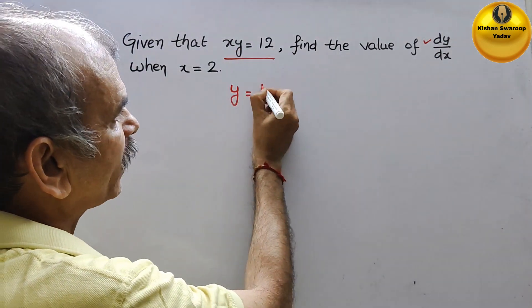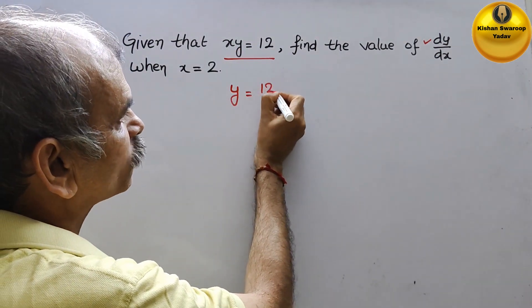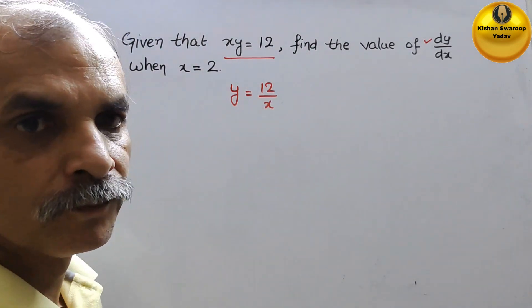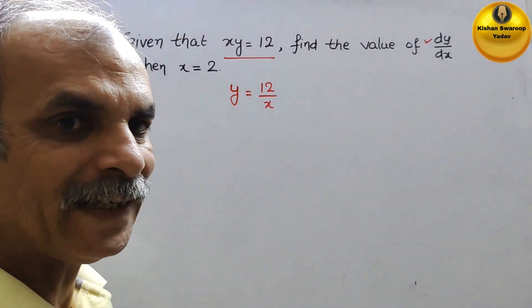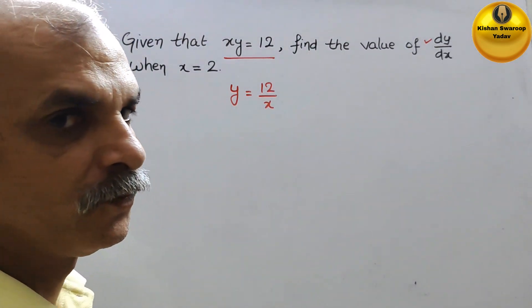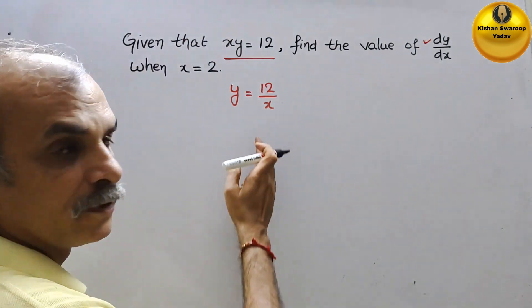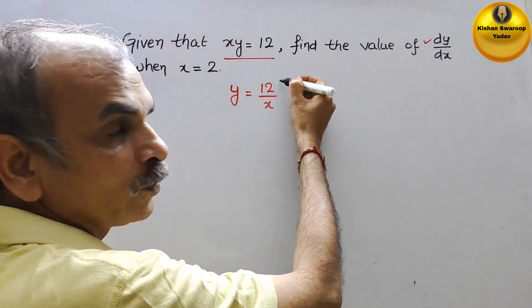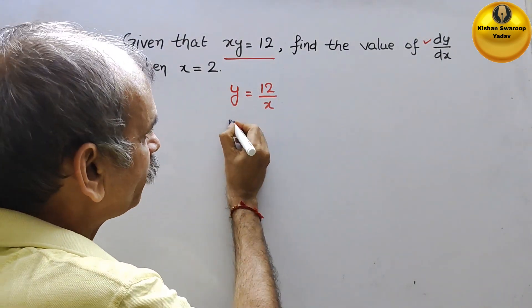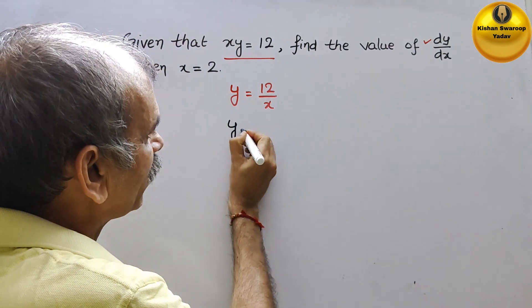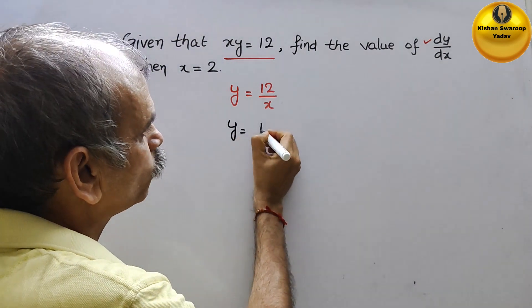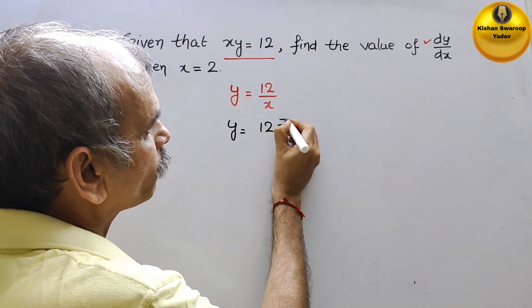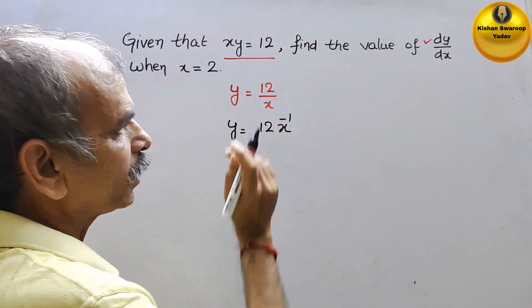So y is equal to 12 by x. We can bring this x upward, so here we will get y is equal to 12 x to the power of minus 1.